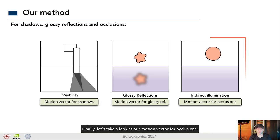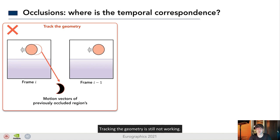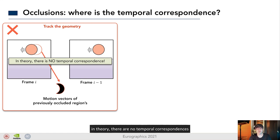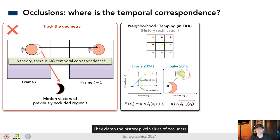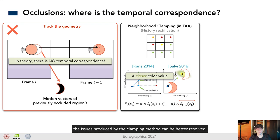Finally, let's take a look at our motion vector for occlusions. Tracking the geometry is not working. However, different from shadows and glossy reflections, when occlusion happens, in theory there are no temporal correspondence of pixels in the occluded regions. The back projected motion vectors of these pixels will always land on occluders. Thus, the previous pixel values cannot easily be used. To alleviate this issue, we start with the clamping method. They clamp the history pixel values of occluders to the current pixel value. But it is still prone to ghosting artifacts, since usually the occluders have completely different colors. Our insight is that if the history value is closer to the current value in the occluded regions, the issue produced by the clamping method can be better resolved. So, we propose to find a closer color instead.